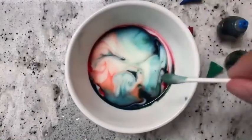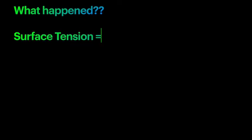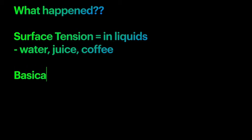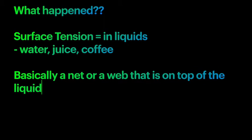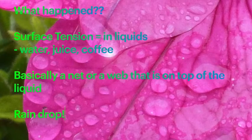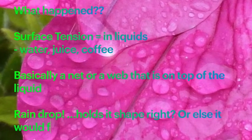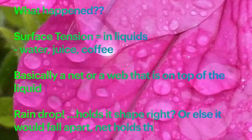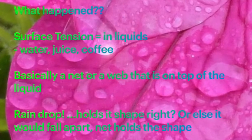Let's figure out what happened. So there's this thing called surface tension, and it's in liquids like water, juice, coffee, and other drinks. It's basically an invisible net or a web that's on top of the liquid. So let's think of a raindrop — we see that it's circular and it holds its shape, and that's really the invisible net or the surface tension that's helping it hold its shape.